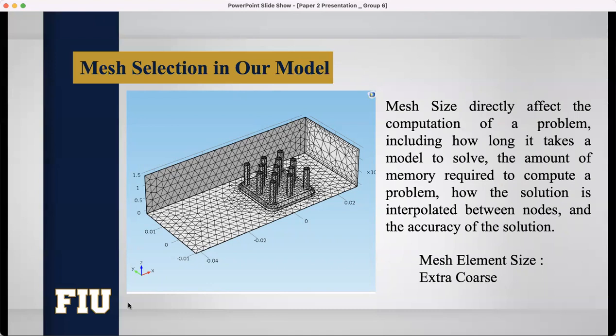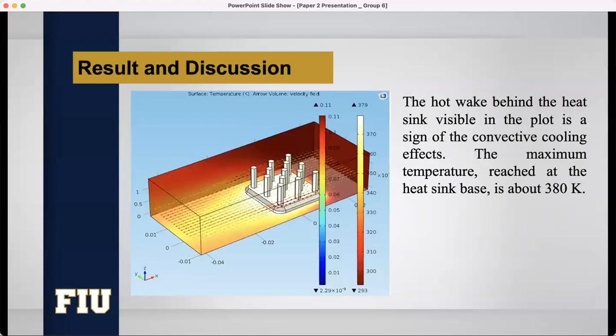After selecting the mesh, our model was like that. Then, we are ready to run our model. Here is the result of our model. From the graph, we can see the hot wake behind the heat sink visible in the plot is a sign of convective cooling effects. And the maximum temperature reached at the heat sink base is about 380 Kelvin. That's how we designed our model.